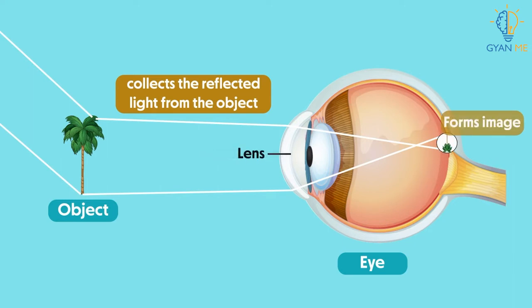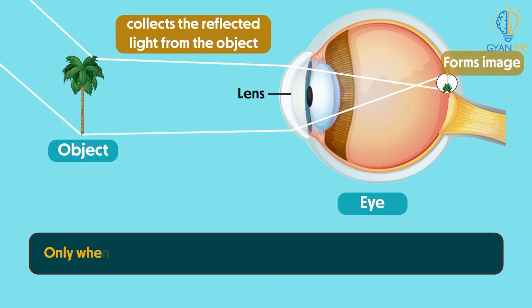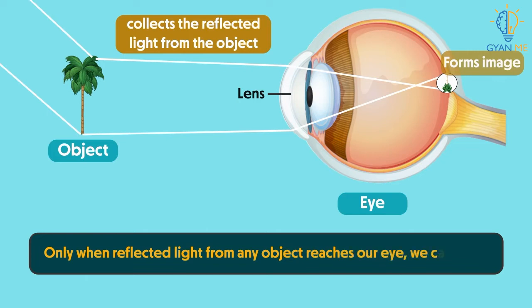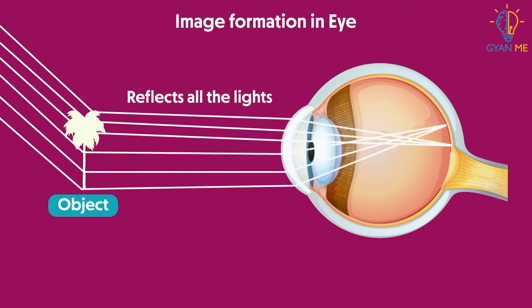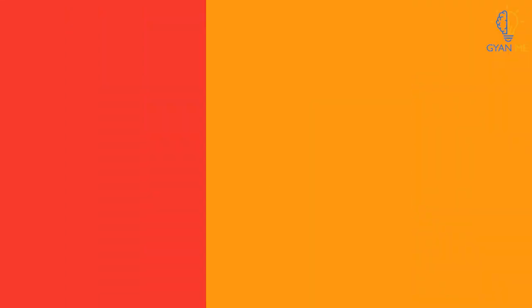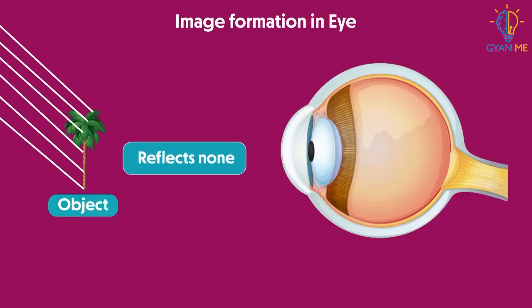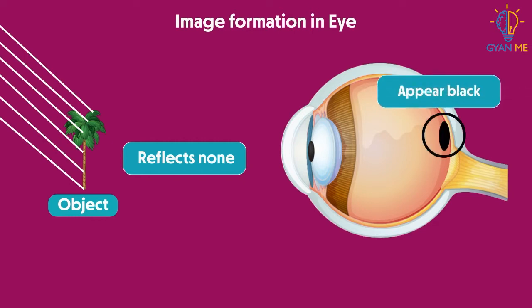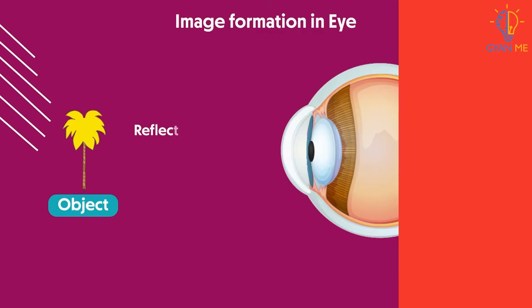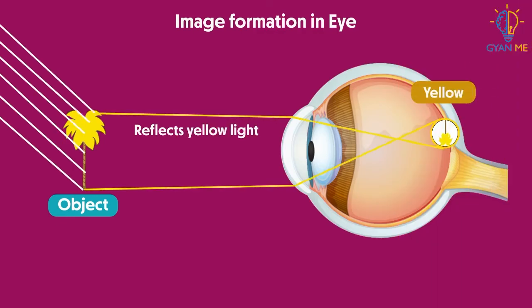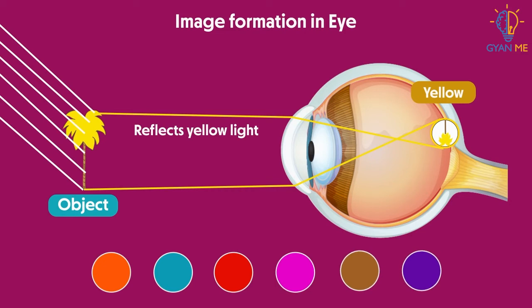The first thing to always remember is that only when reflected light from any object reaches our eye, we can see it. If an object reflects all the light, it will look white to us. And if it absorbs all the light — that is, reflects none — it will appear black to us. What about colored objects? If an object reflects green light, we perceive it as green. If it reflects yellow, we will see it as yellow. All the rest of the colors are absorbed by the objects.